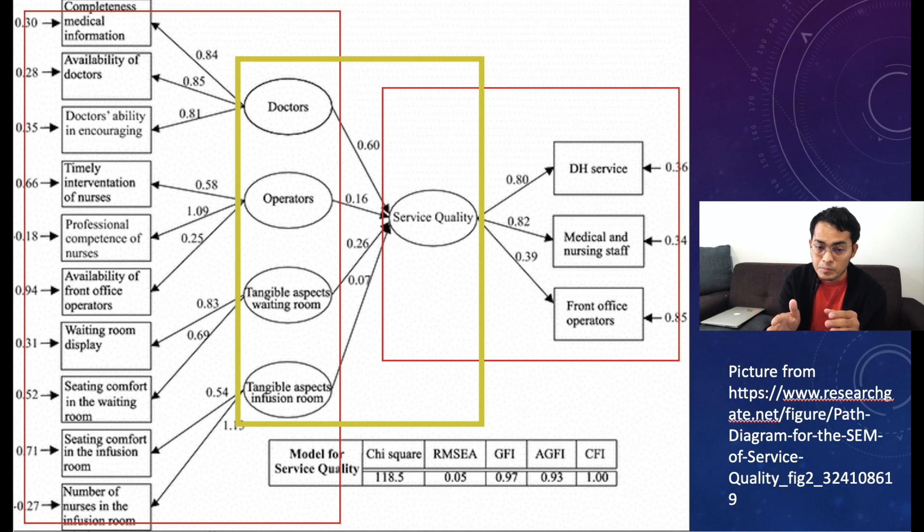There is a direct effect from doctors, operators, tangible aspects waiting room, tangible aspects, to surface quality. So independent variables have direct effect to surface quality. So this is the path model. It's just only using regression models here.